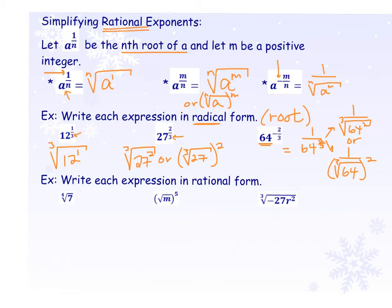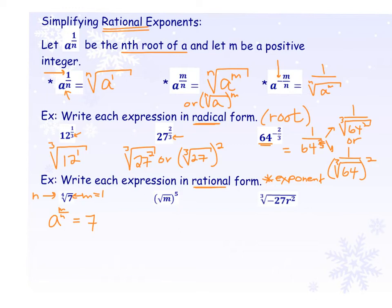Now we'll go in the other direction: write each expression in rational form, meaning as a fractional exponent. All of them currently have radical symbols. For the fourth root of 7: n is the index so n equals 4, and since 7 doesn't have an exponent written, m equals 1. Writing as a to the m over n power gives 7 to the 1 over 4 power. That's all you do.